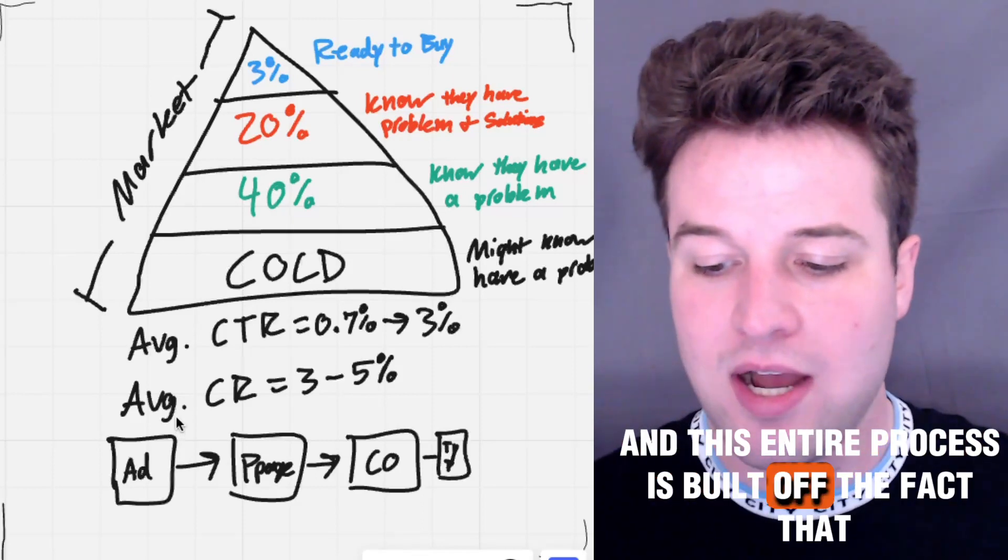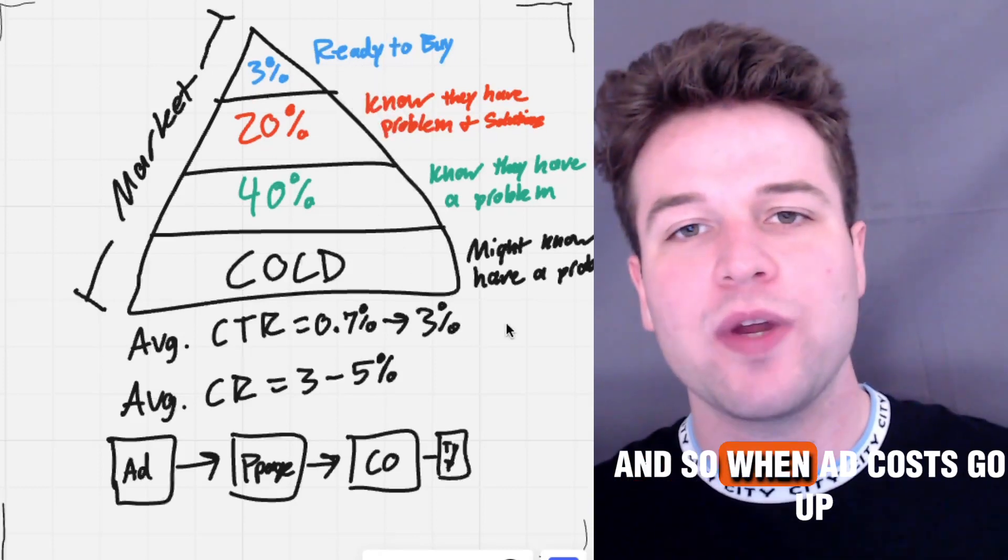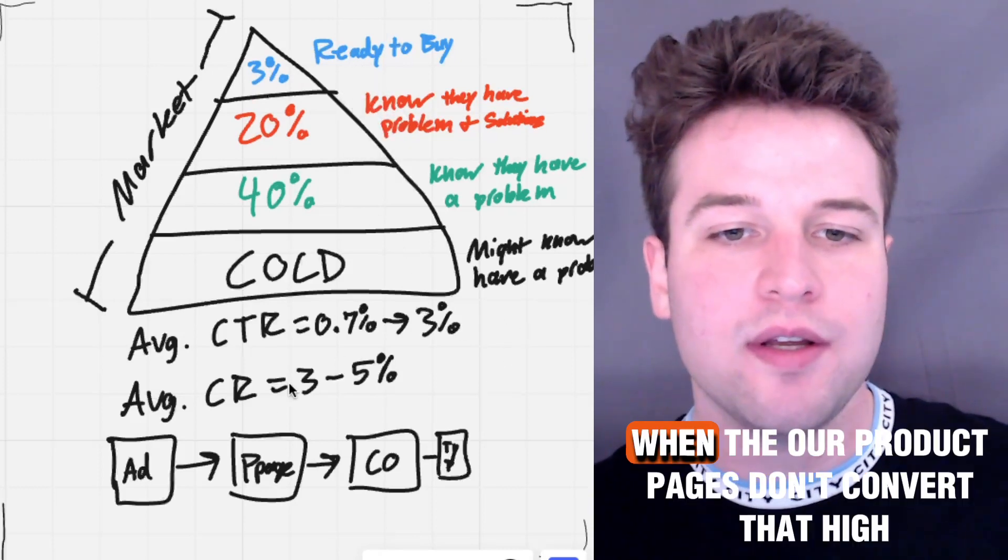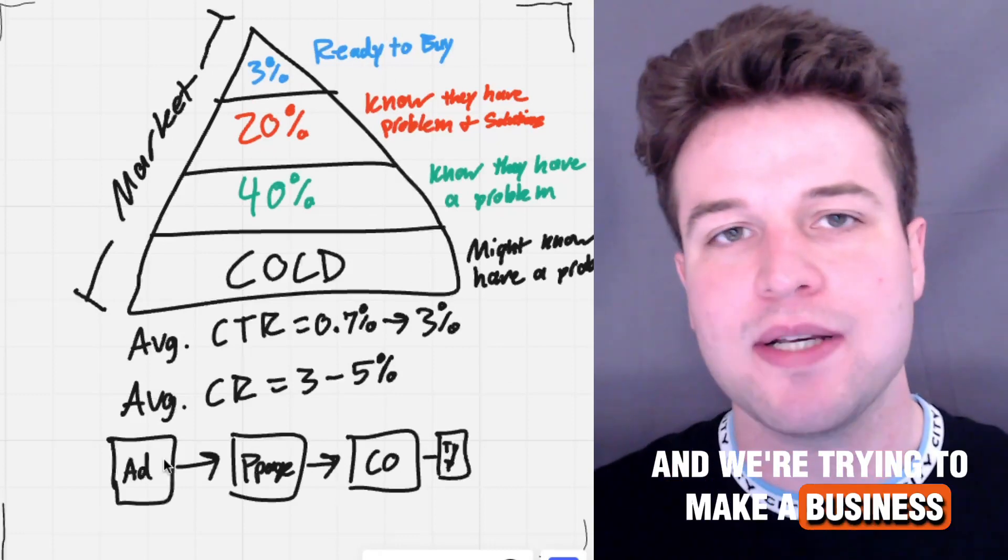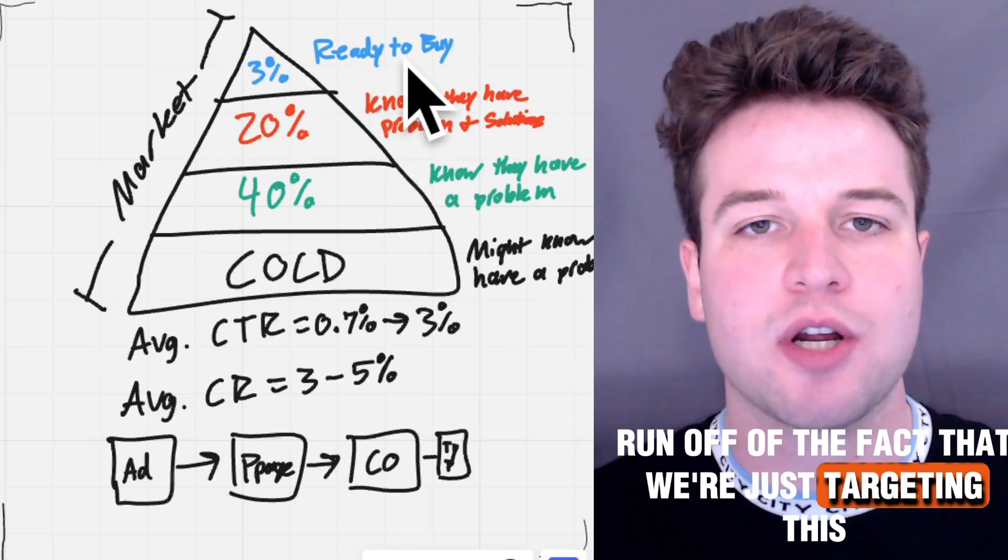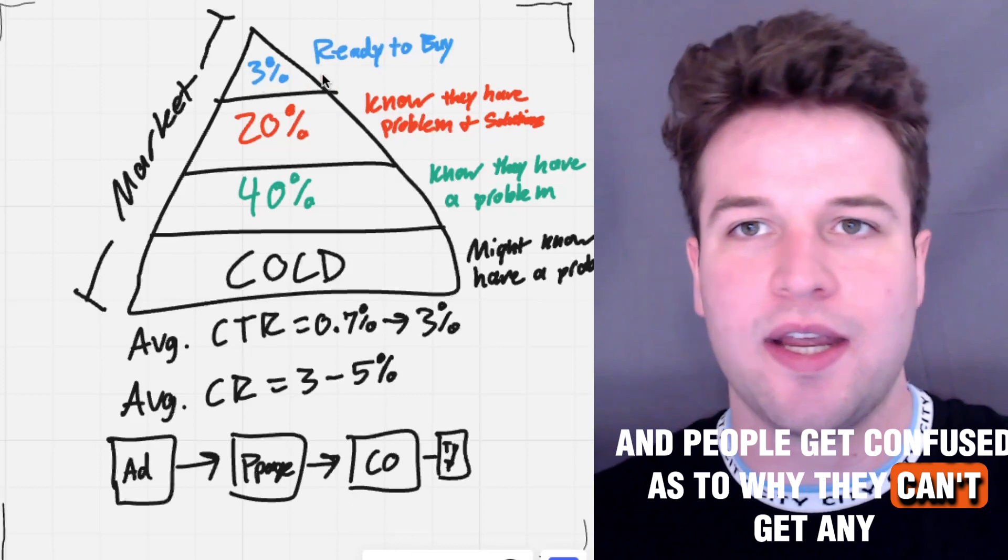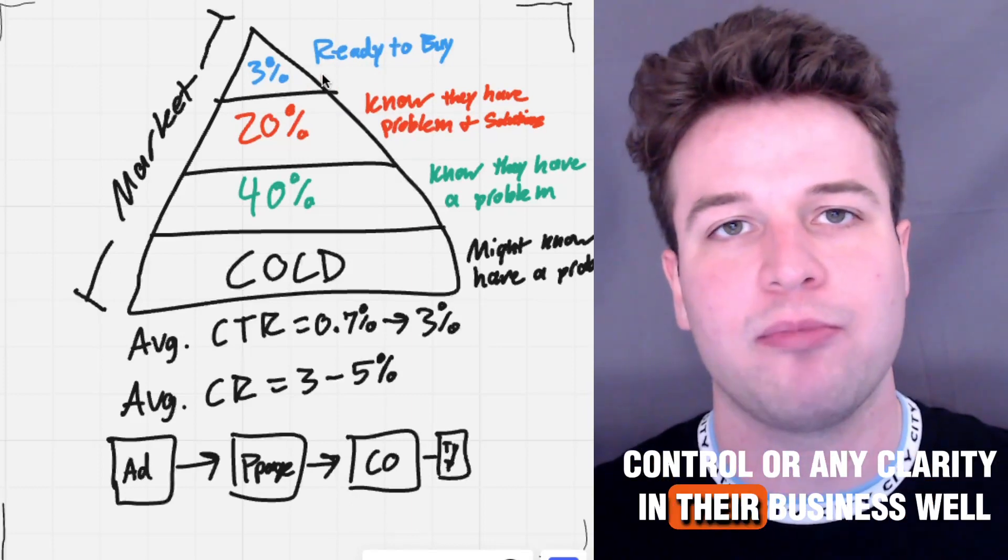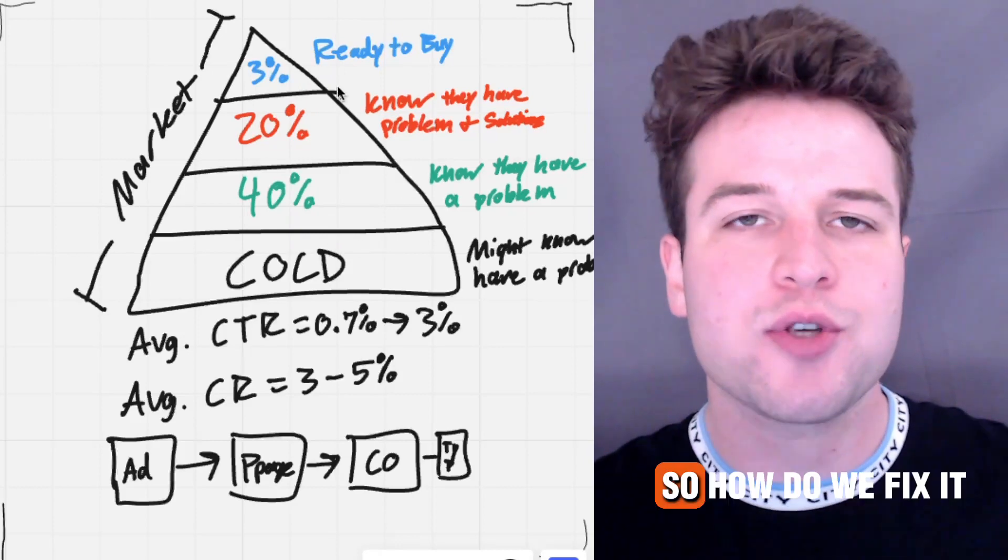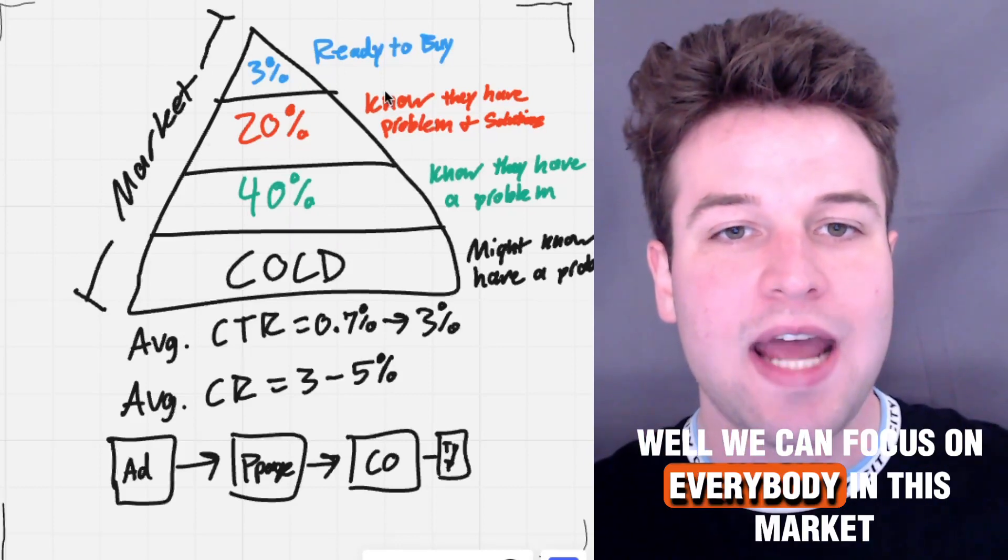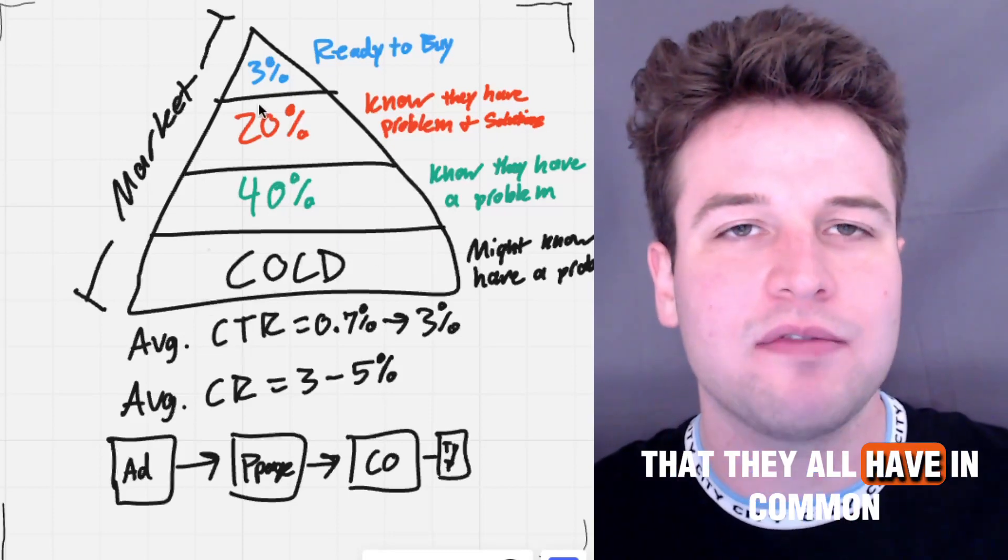And this entire process is built off the fact that they're just focusing on this 3% of people. And so when ad costs go up, we get confused. When our product pages don't convert that high, we get confused. And we're trying to make a business run off the fact that we're just targeting these people up here. And people get confused as to why they can't get any control or any clarity in their business. Well, this is why. Because you're not focusing on anybody else here.